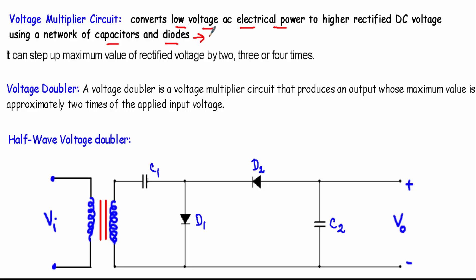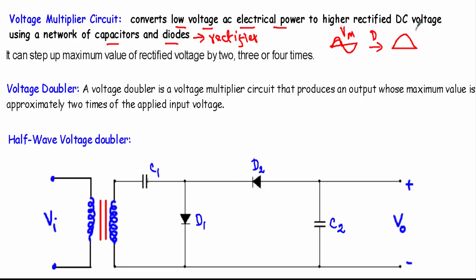A diode acts as a rectifier — if I apply an alternating signal at the input side of the diode, it will convert this bidirectional voltage into a unidirectional voltage. If the maximum value of the input voltage is Vm, the voltage multiplier circuit will convert this maximum value to two times, three times, or four times that value.